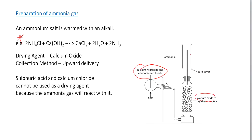Ammonia is collected by upward delivery. We cannot use sulfuric acid or calcium chloride as the drying agent for ammonia — sulfuric acid will react with ammonia because ammonia is a base, and calcium chloride will also react with ammonia. So the drying agent we typically use is calcium oxide.